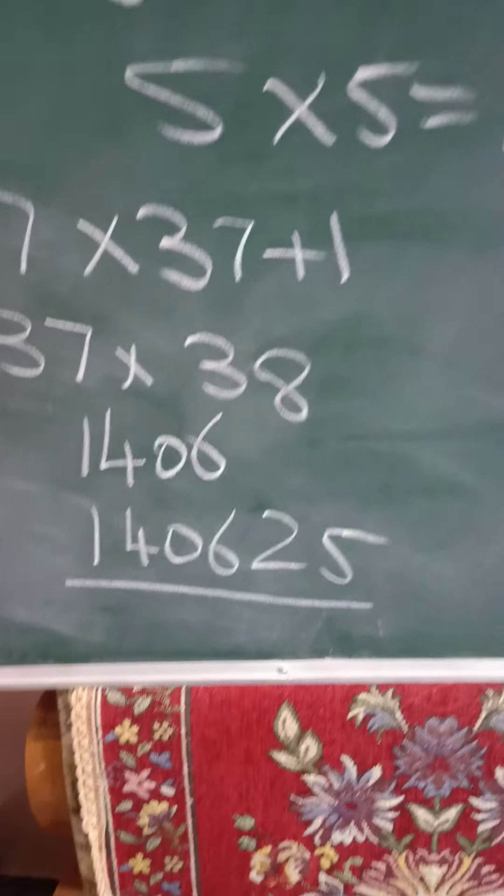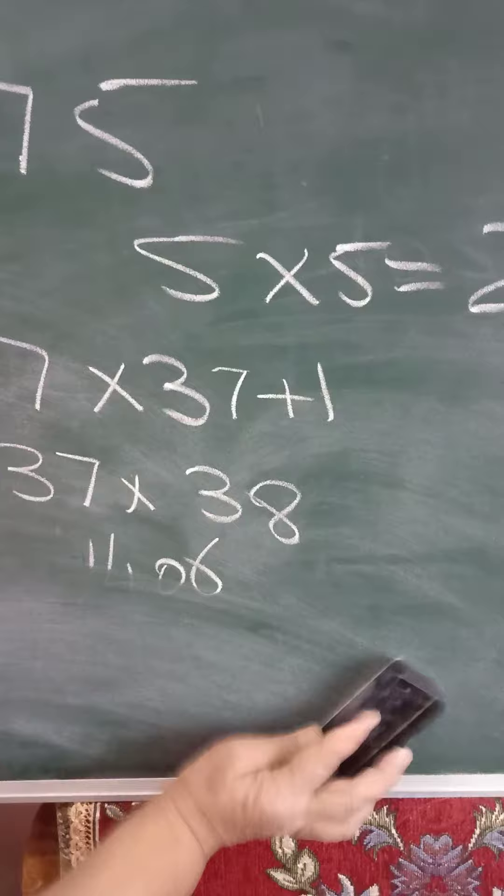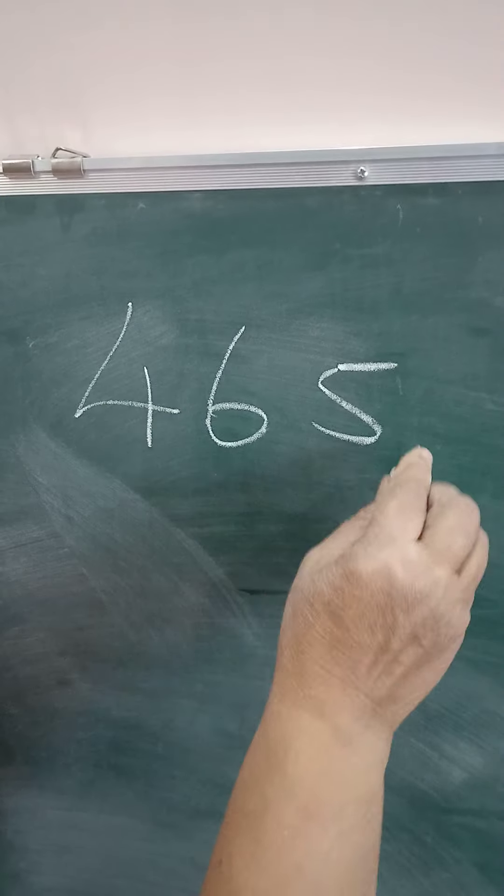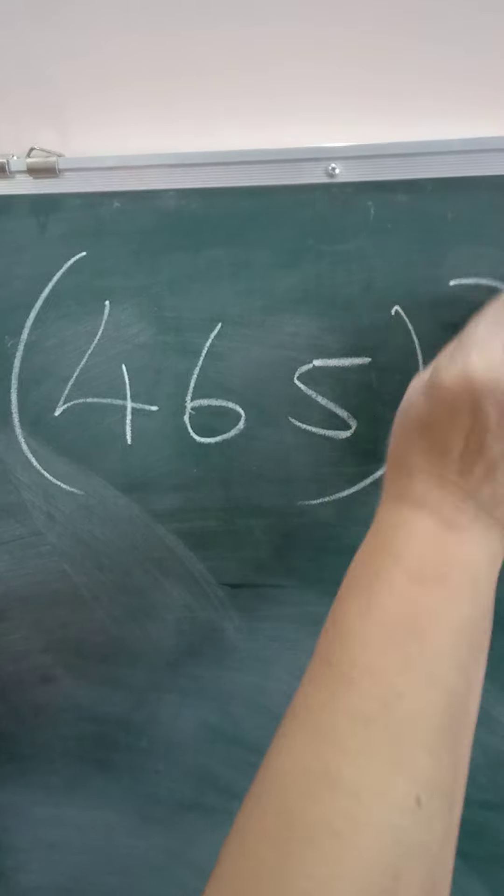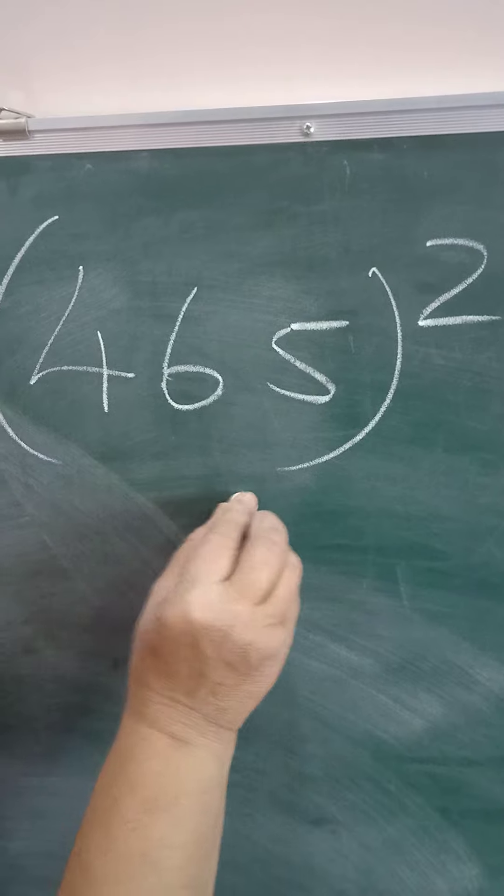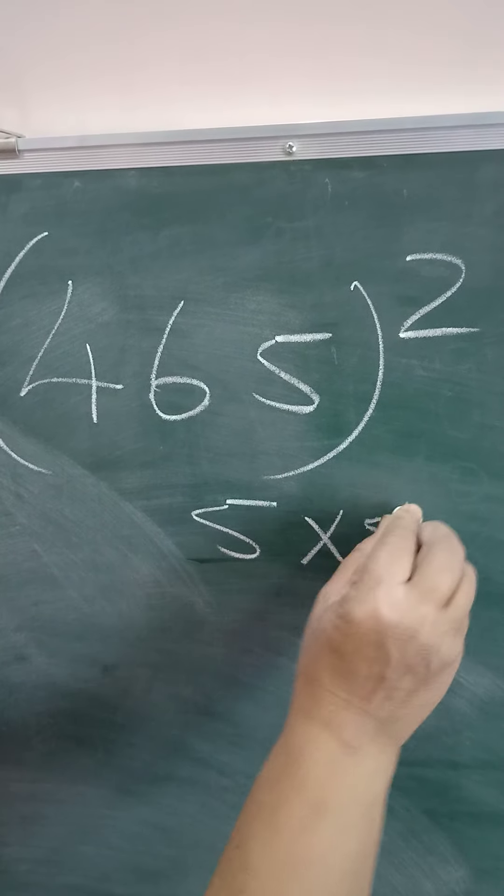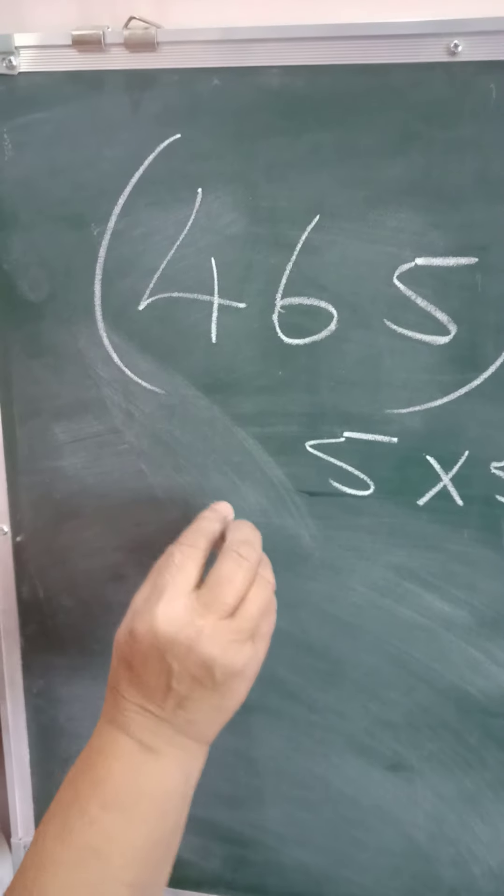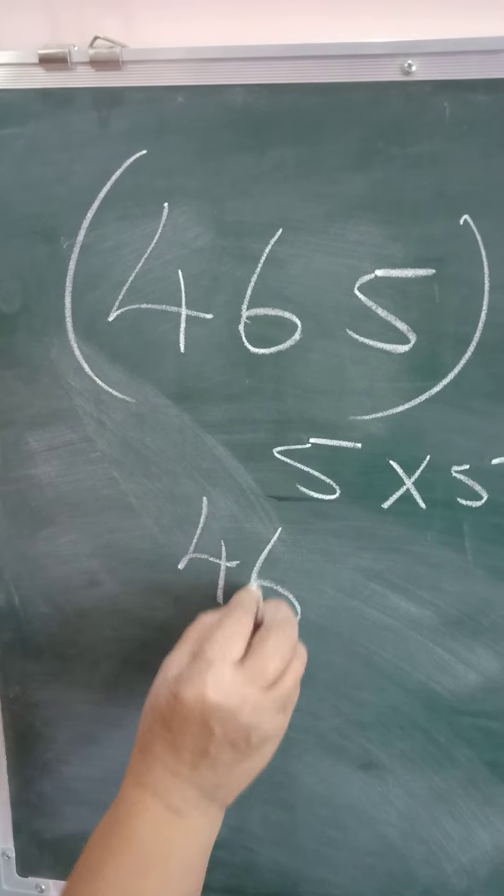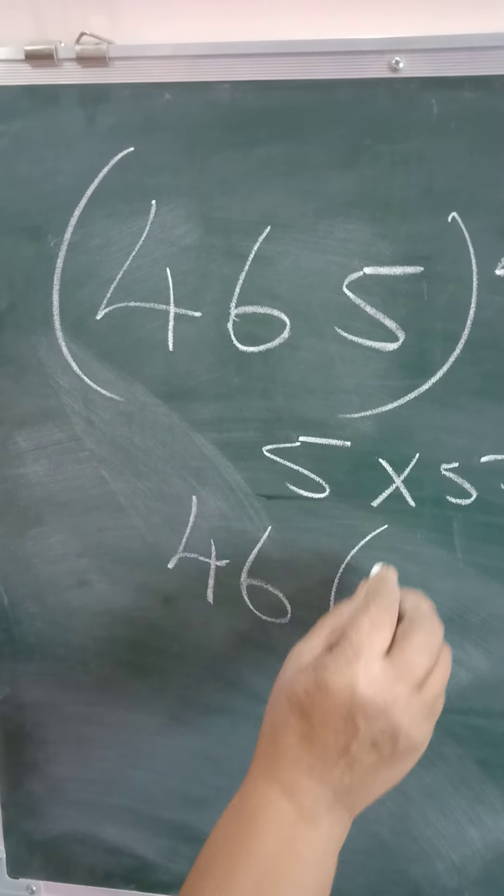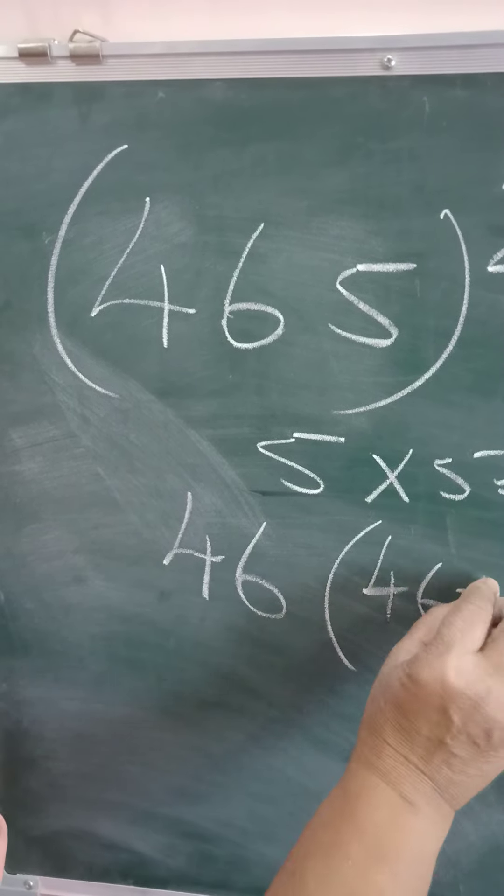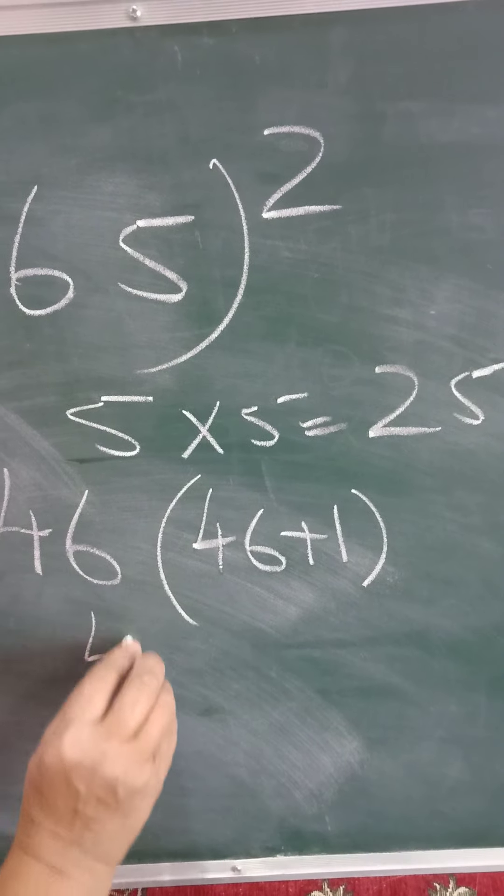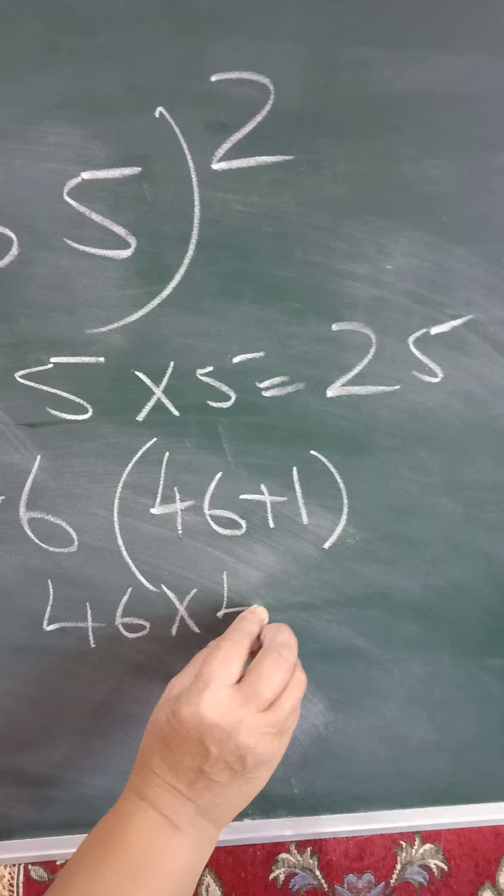Okay children, we can see many more examples. Now we will see, next example. 465 square. So 5 is the last digit. 5 into 5 is 25. What is the next step? Yes, very good. 46 multiplied by 46 plus 1. Next number that is 46 multiplied by 47.